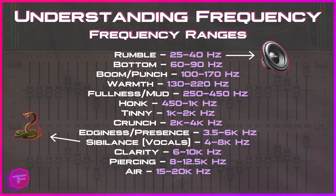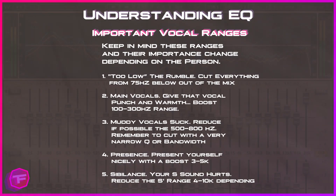It's important to fully understand these frequency ranges when editing EQ for your music track, podcast, or vocals. Keep in mind that the ranges mentioned depend on the person, the microphone, and the environment. Everyone has a different frequency range, but this is a general guide. For the "too low" area or rumble, generally you want to cut everything from your vocals around 75 Hz and below.